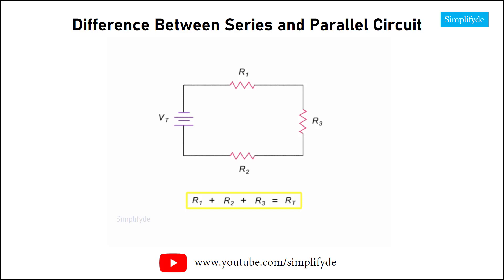So, if R1 has a resistance of 20 ohms, R2 a resistance of 30 ohms, and R3 a resistance of 10 ohms, the total resistance of the circuit is 60 ohms.